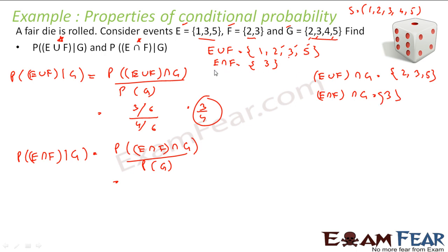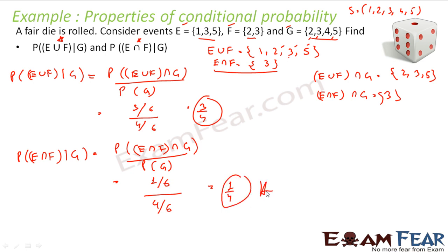Since E∩F∩G has only one element, the probability is 1 by 6 — one favorable outcome out of the six elements in the sample space. Divided by probability of G, which is 4 by 6 since G has 4 elements. So the answer becomes 1 by 4. Not that difficult — this is a direct application of formulas.